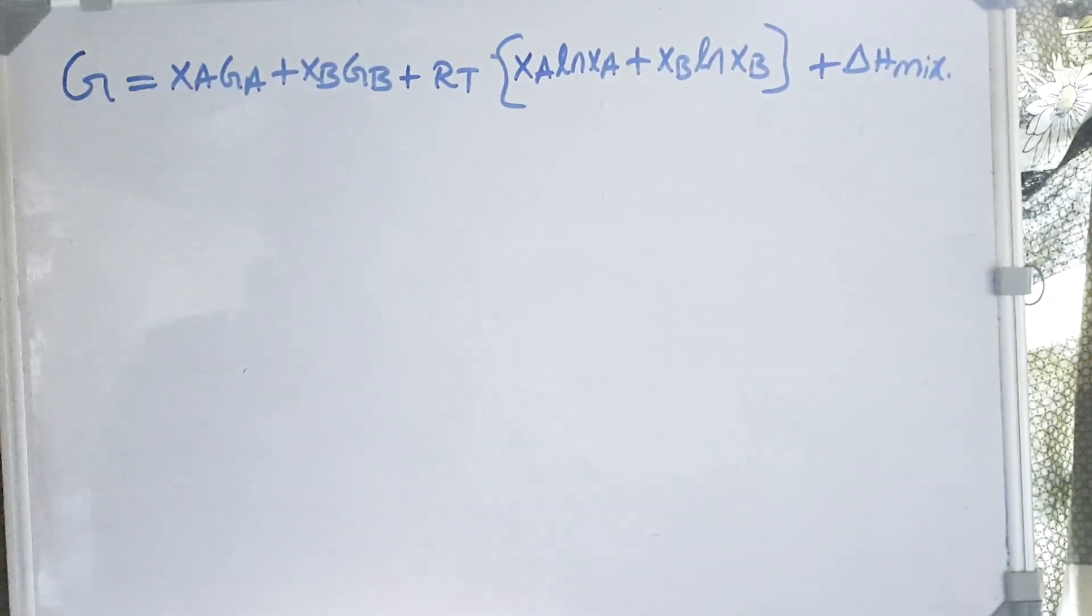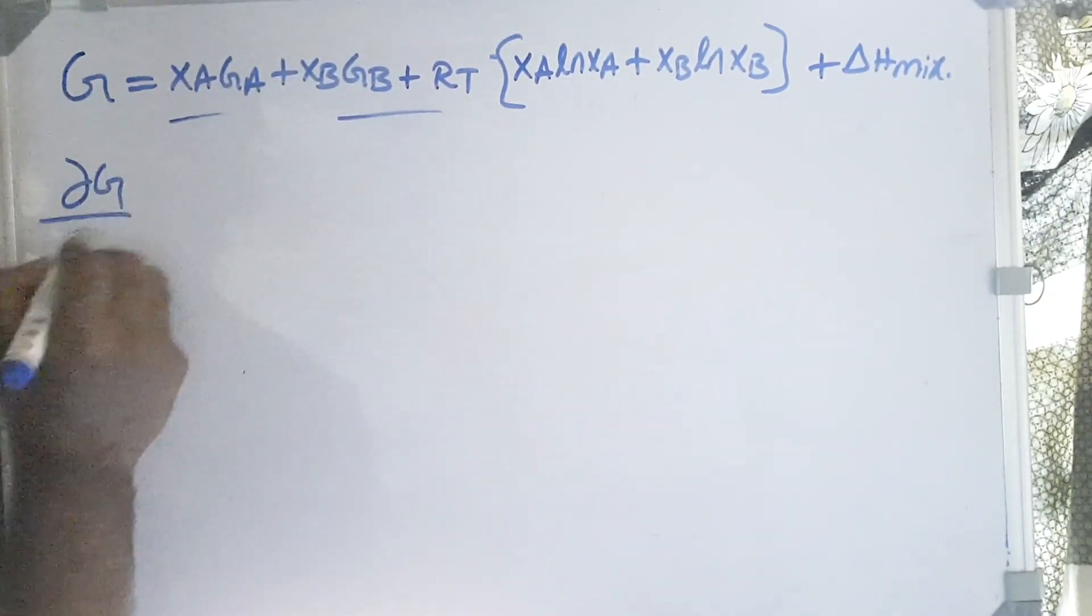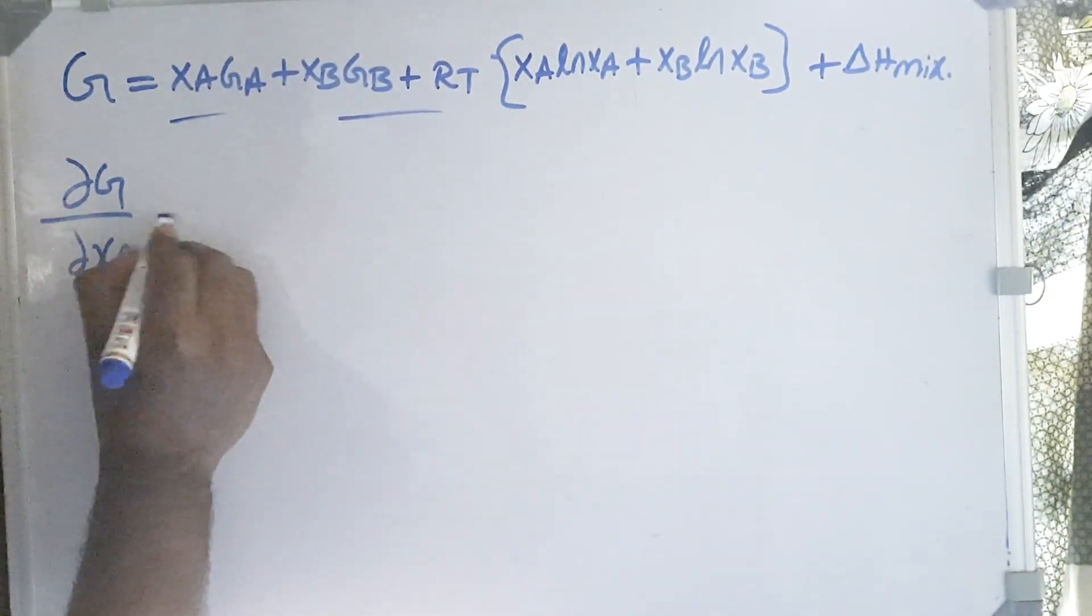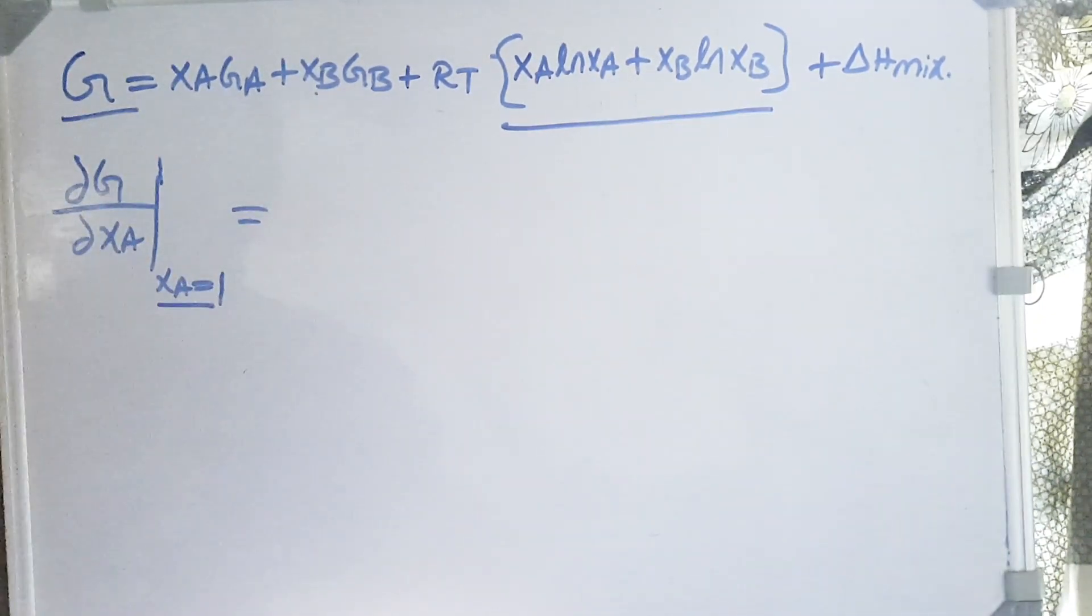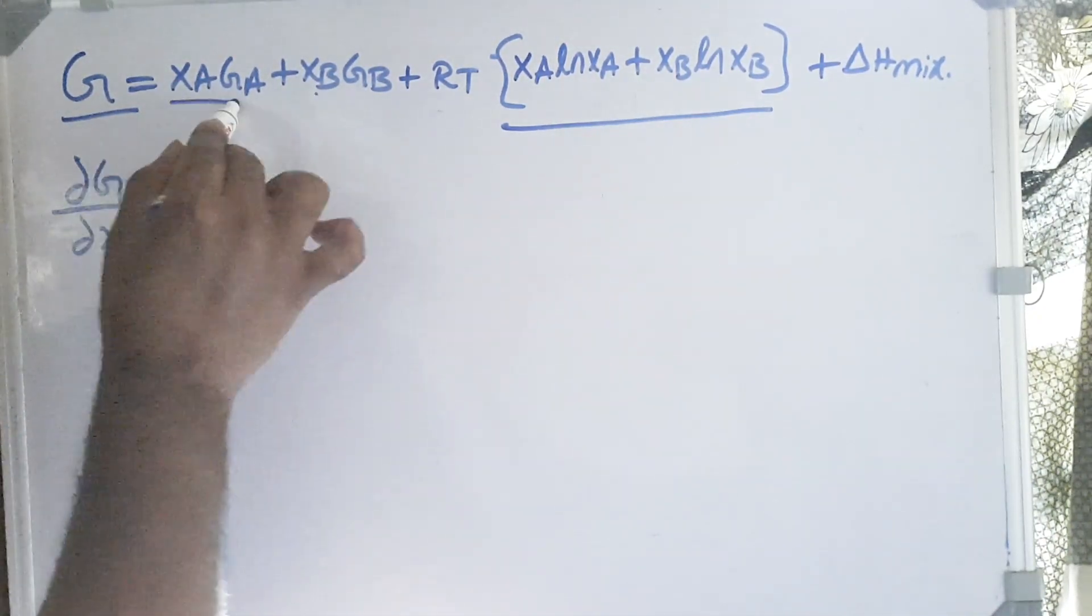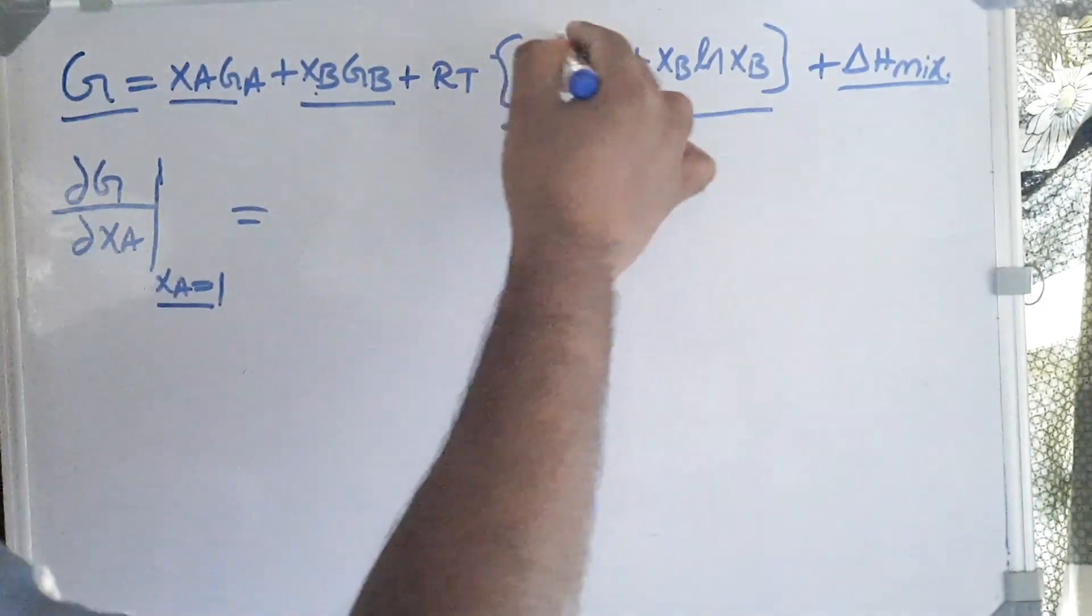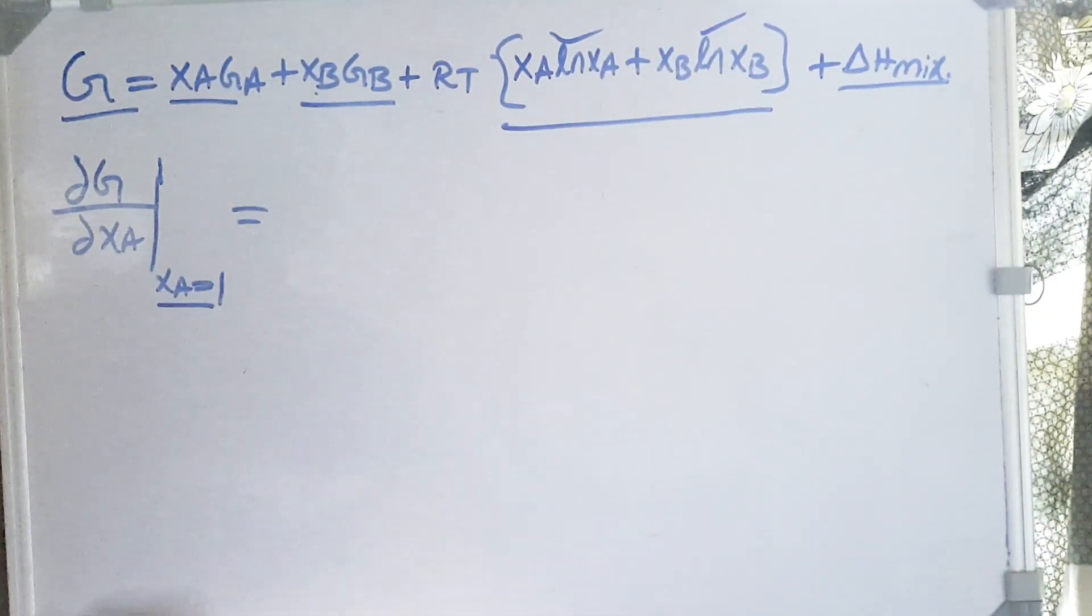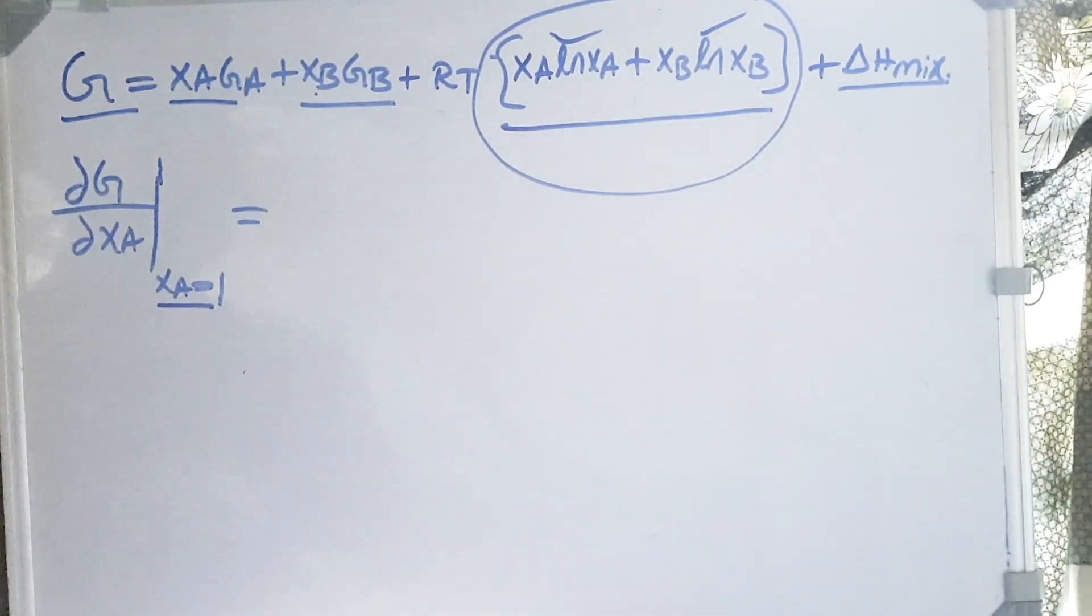Let us substitute this in this equation and see what we are going to get. This is the equation we got now. Let us differentiate with respect to XA and put XA tends to 1, because here we are trying to find out what happens if we are trying to get a pure substance. After differentiating, these are linear terms so they don't create much problem, but here we have logarithmic terms.